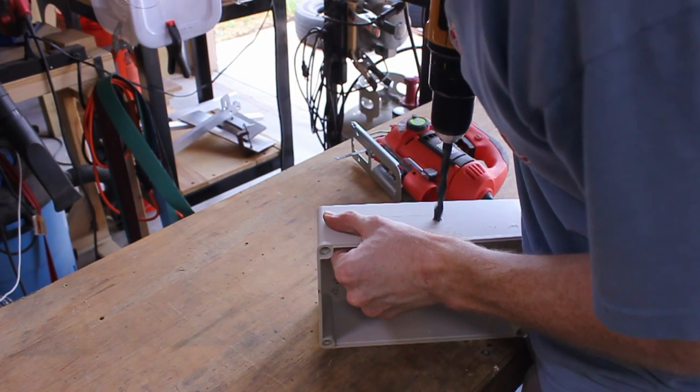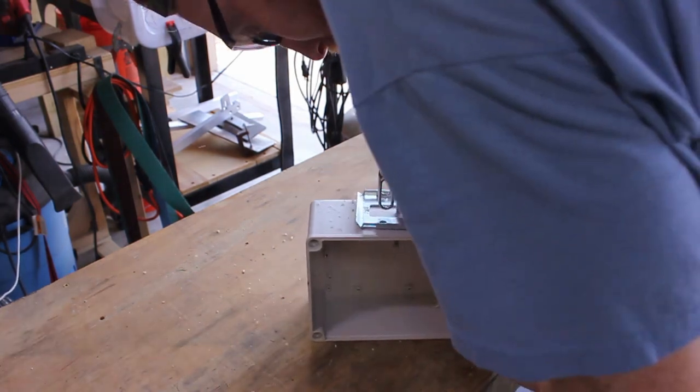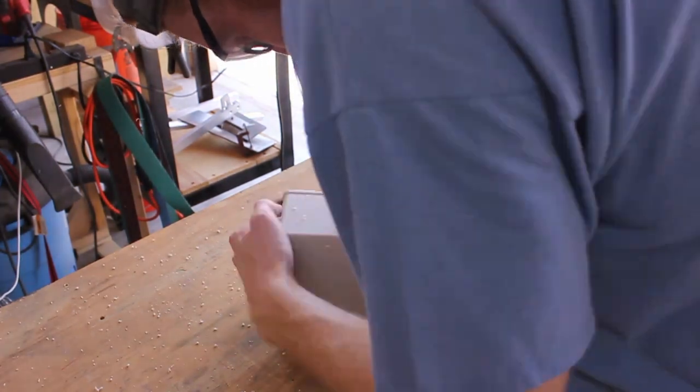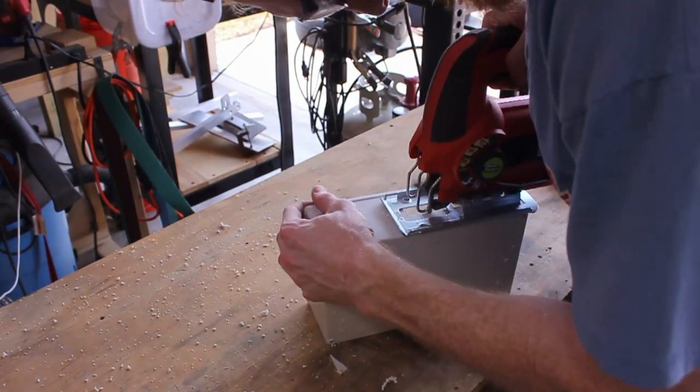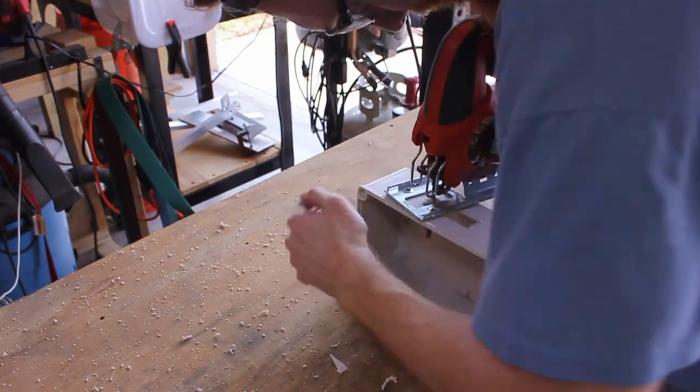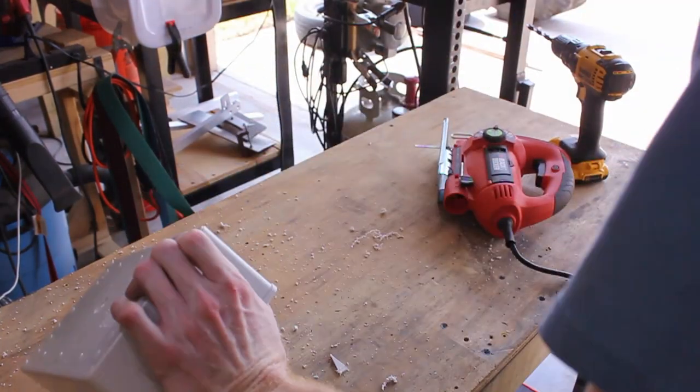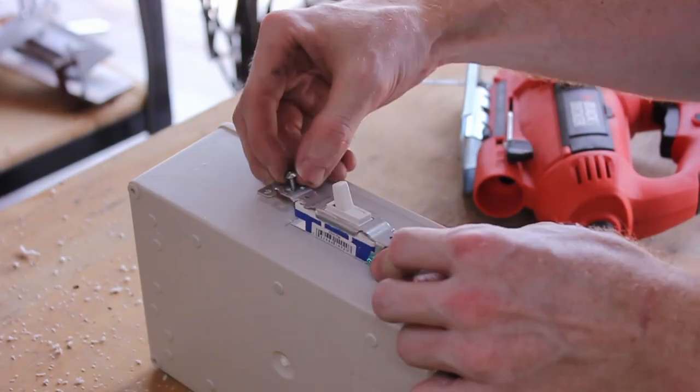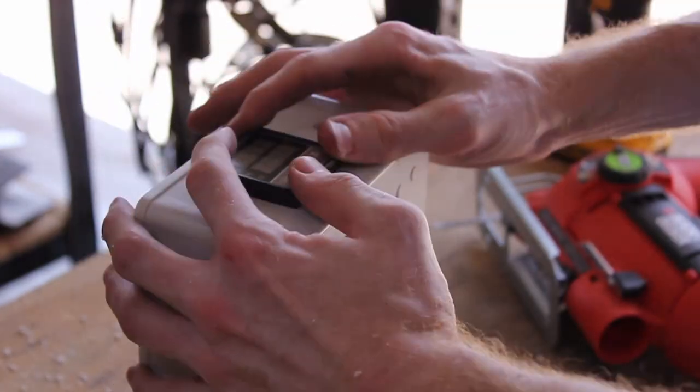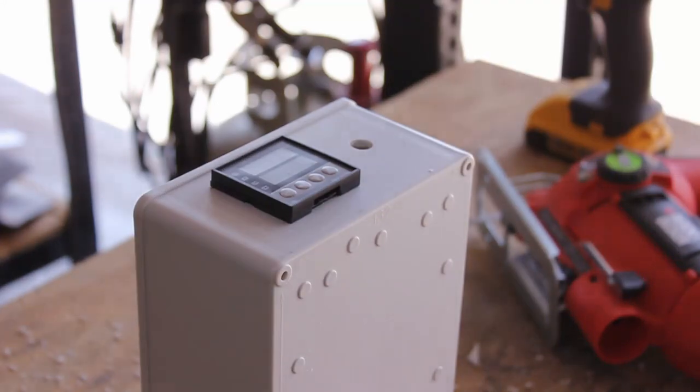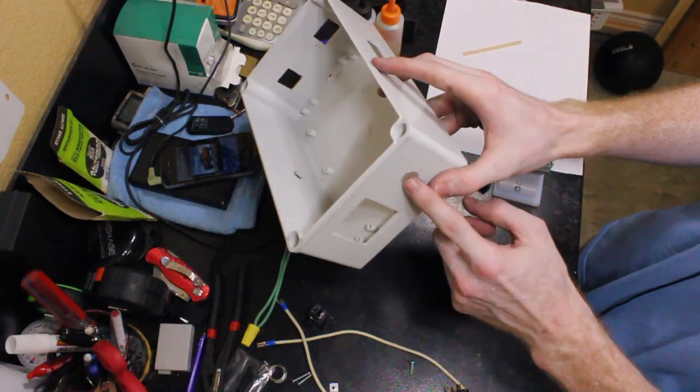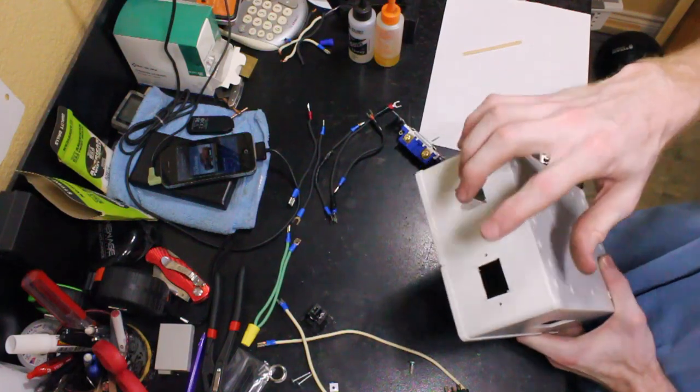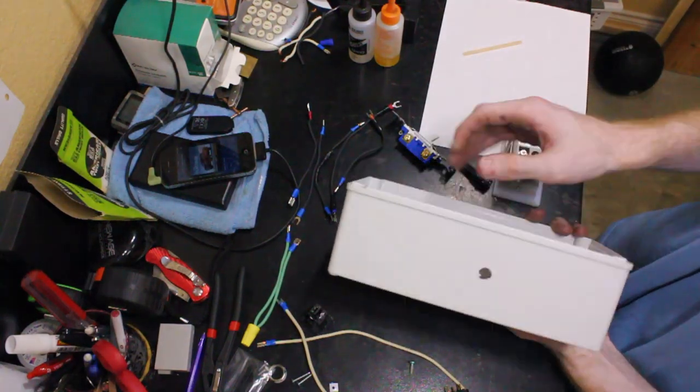So go ahead and measure out your components and start drilling and cutting these slots for these components to fit into your project box. I'm using a half-inch drill bit and then a jigsaw to go ahead and turn those circular holes into square holes for our components.